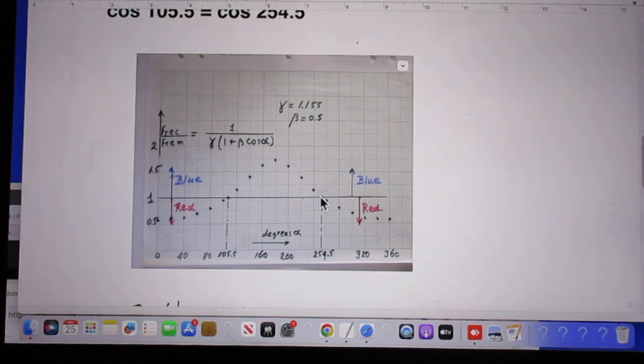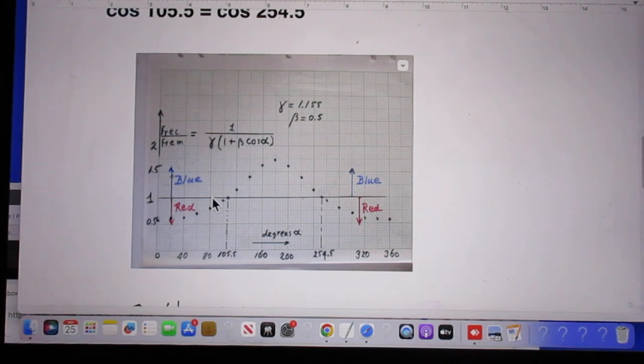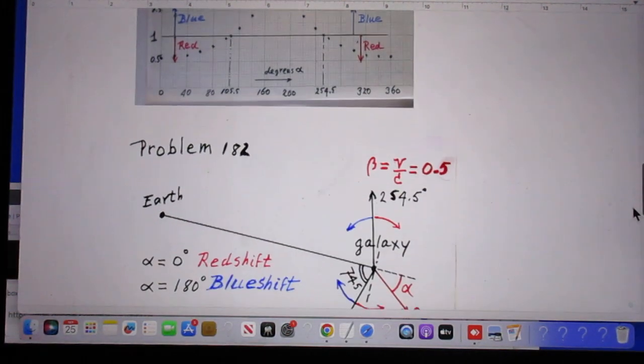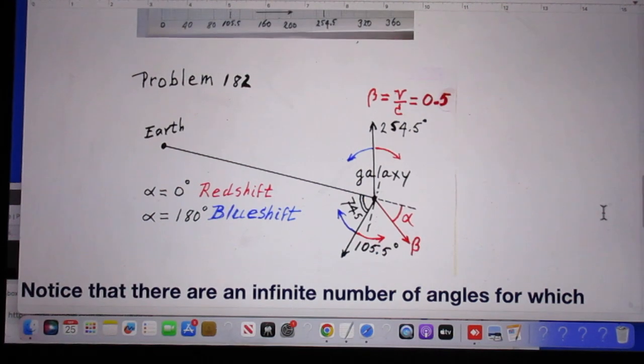If you look at 90 degrees here, this is 80, this is 100, so this is about 90 degrees here. Notice that the value is smaller than 1, thus redshift. So if we look now at the picture, alpha 0, yes there is redshift. Alpha is 180 degrees, yes there is blueshift.